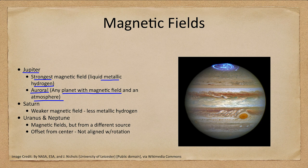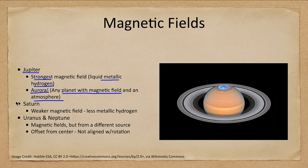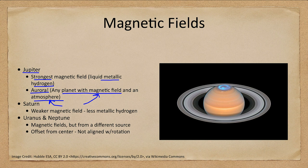Saturn has a weaker magnetic field than Jupiter but does have aurora as well. We can see the aurora on Saturn up near the pole. If a planet has a magnetic field and an atmosphere, it is going to have an aurora.